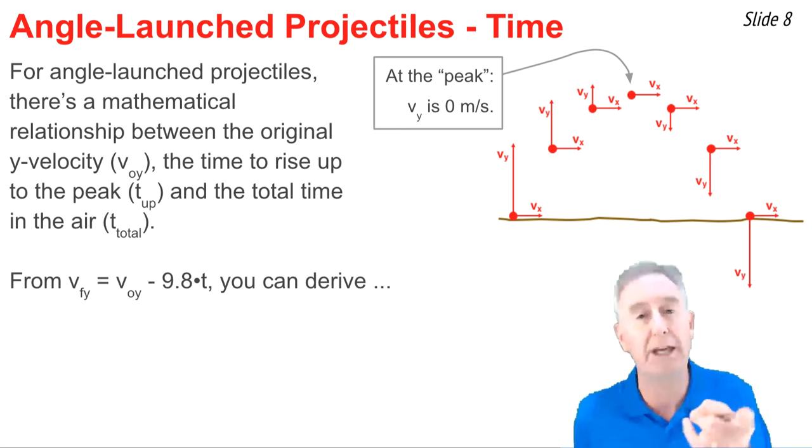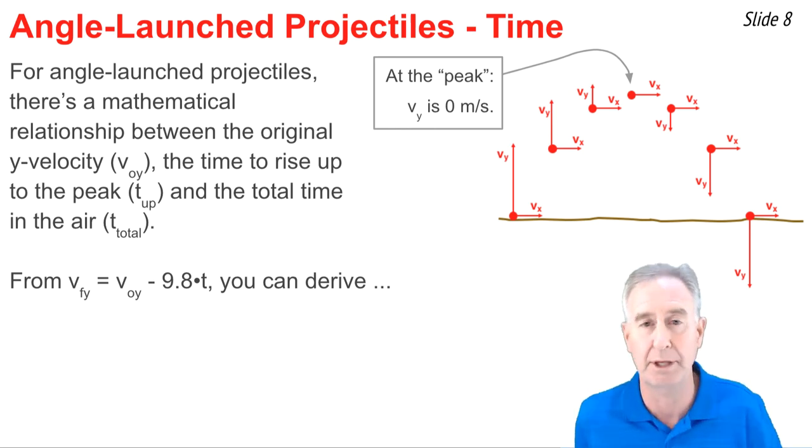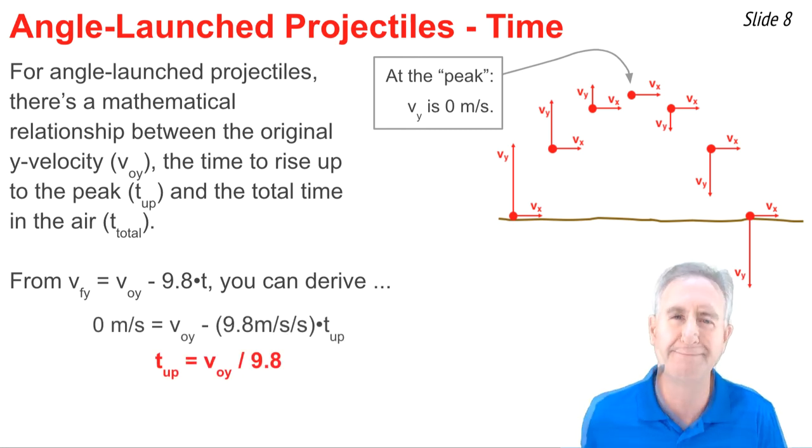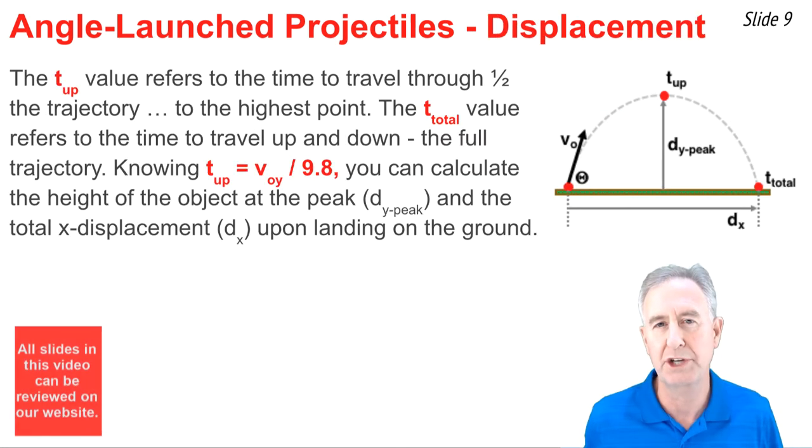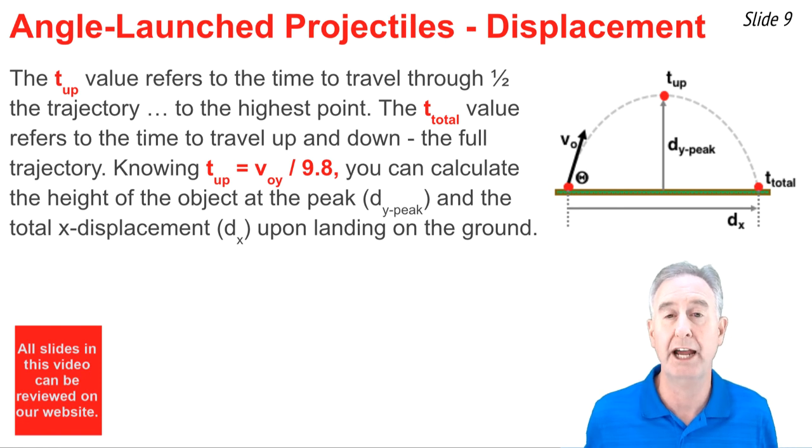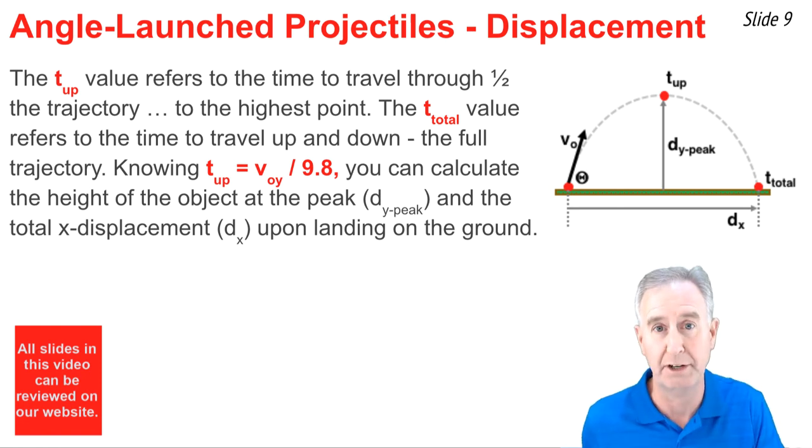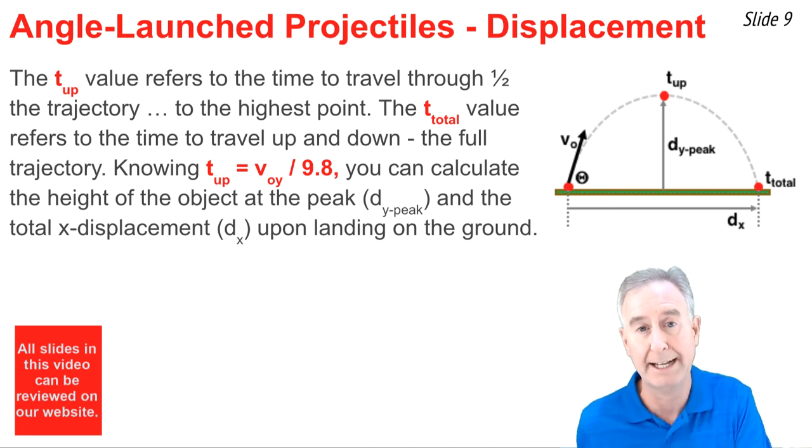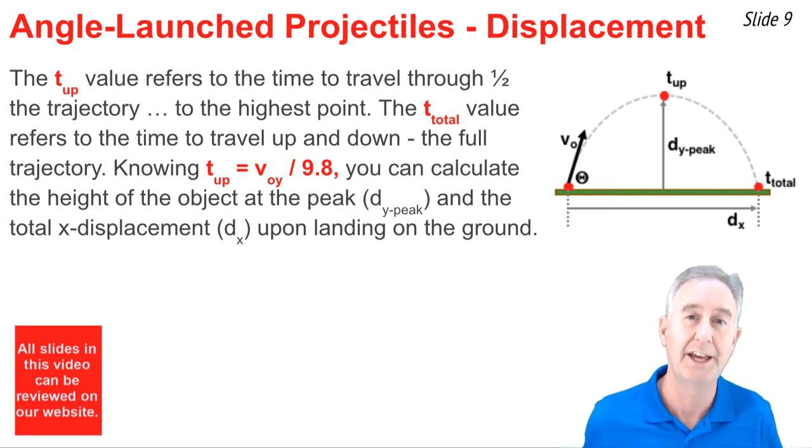Now, since the time to go up equals the time to come back down from the peak, the total time in the air is simply twice the time up. For angled launch projectiles, the time up refers to the time to travel through half of the trajectory, and the total time refers to the time to travel up to that highest point and back down to the original starting height.